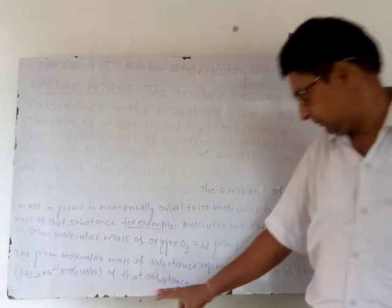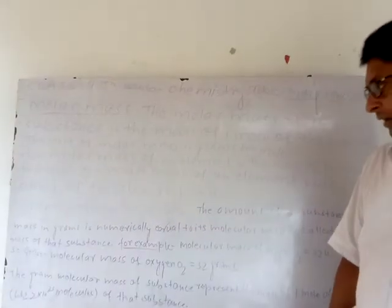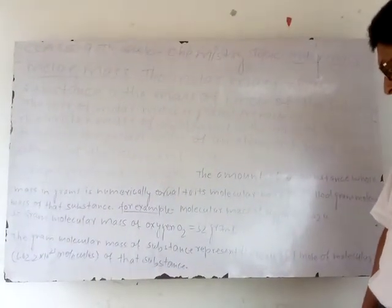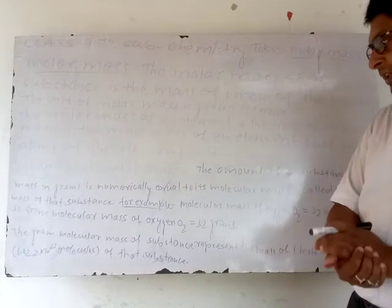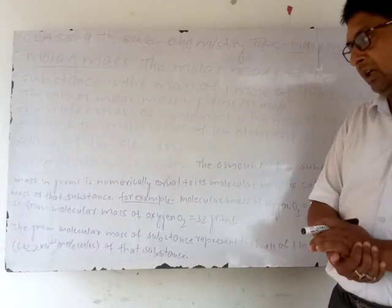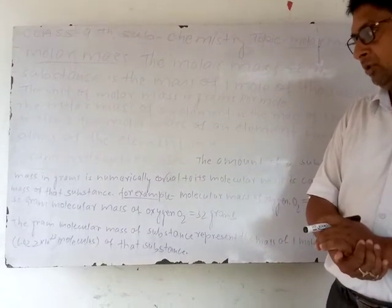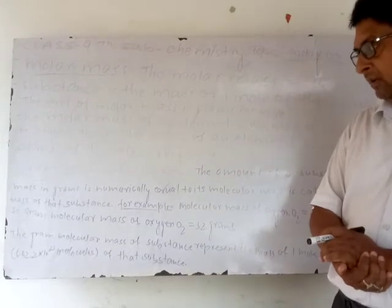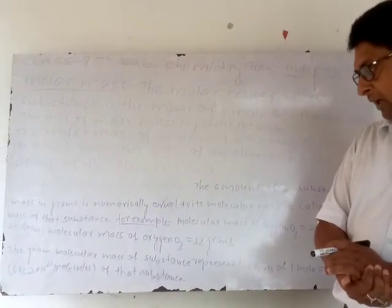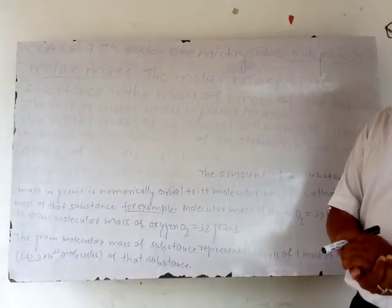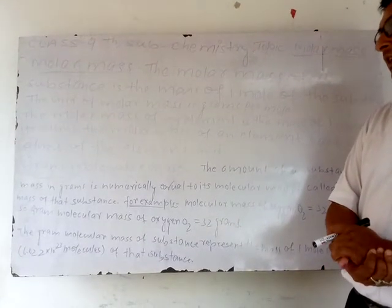Gram molecular mass represents one mole, and one mole contains 6.022 × 10^23 molecules of that substance. This is what the substance represents.